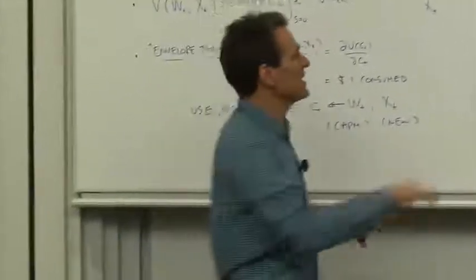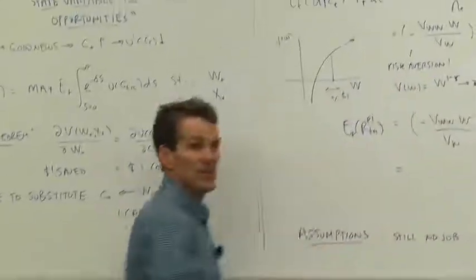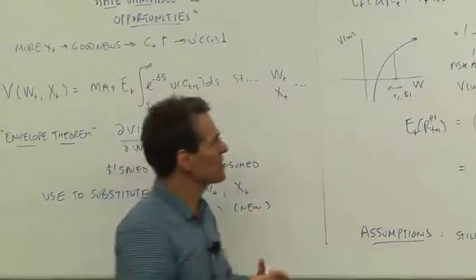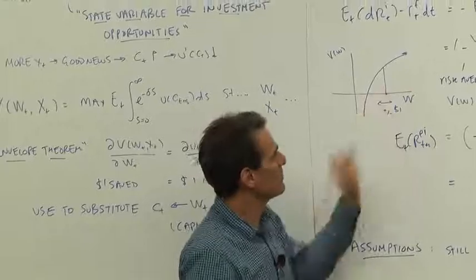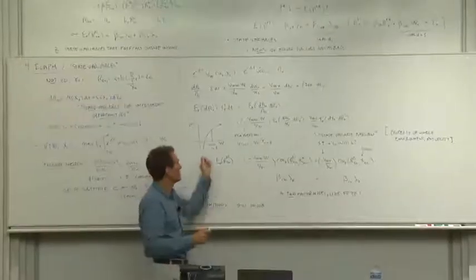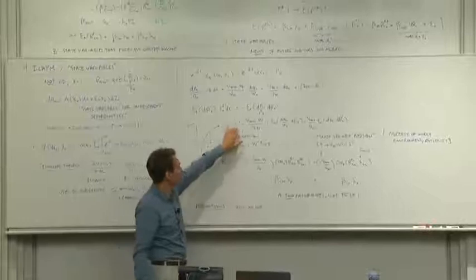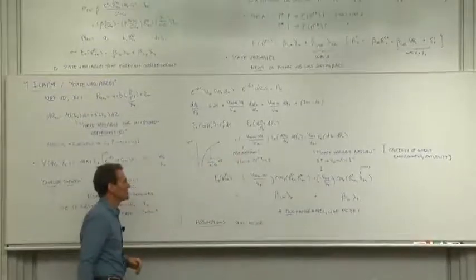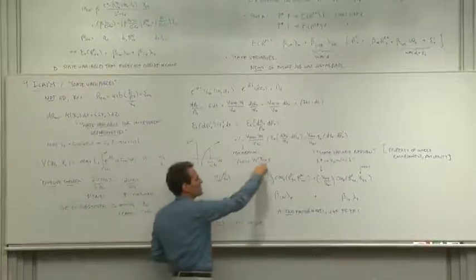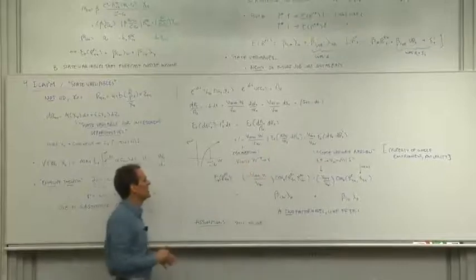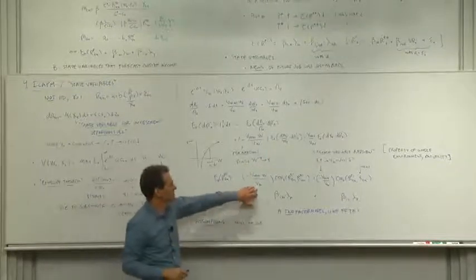Risk aversion really is the curvature of the value function because we measure risk aversion by asking people how would they react to betting a dollar. Your reaction to bets on wealth. That's in fact the correct definition of risk aversion. If the value function has this power form, it's our friend gamma again, but that quantity is risk aversion.